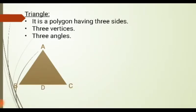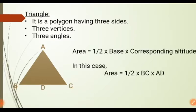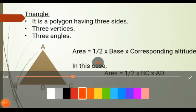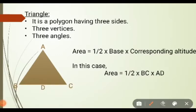Next we have the area of a triangle. It is given as half into base into corresponding altitude. For this triangle, the area will be half into BC into AD, since we have considered BC as the base, which means AD will be taken as the altitude. So the area will be half into BC into AD.